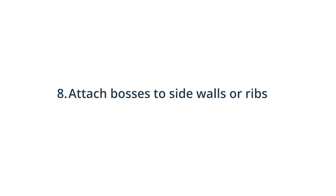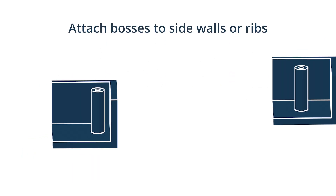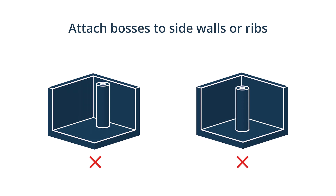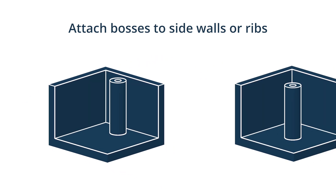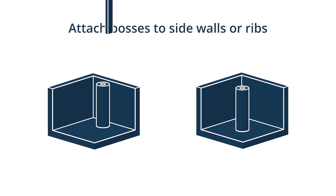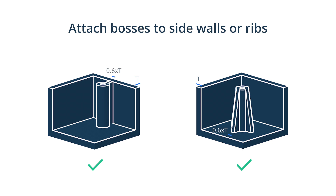Tip 8: Attach bosses to side walls or ribs. Bosses are cylindrical standoffs molded into a plastic part to accept an insert, self-tapping screw, or pin for assembling or mounting parts. The outer diameter of the boss should be 2.5 times the screw diameter for self-tapping applications. Bosses shouldn't be freestanding — always attach them to a side wall or to the floor with ribs or gussets. Their thickness should not exceed 60% of the overall part thickness to minimize visible sink marks. For example, a part with an outer wall of 3mm should have internal ribs no more than 1.7mm thick.